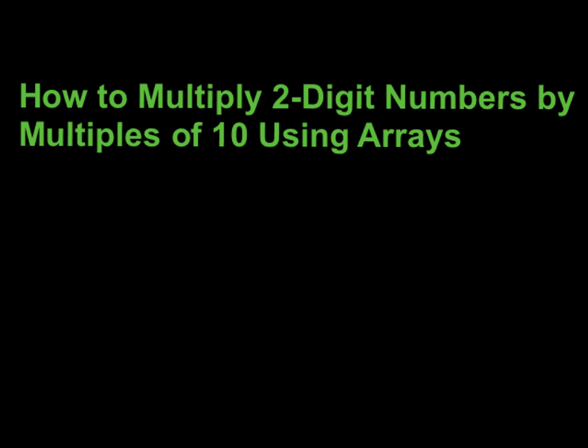Let's learn how to multiply two two-digit numbers when one of those two-digit numbers is a multiple of 10. We're going to do it by using arrays so you can understand what's going on.